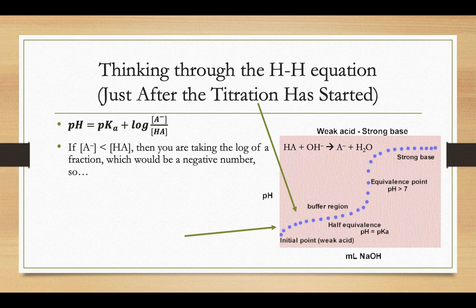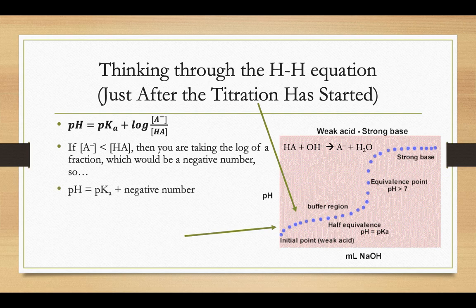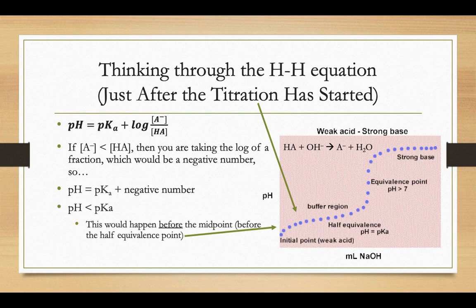So the A minus concentration would be less than our HA, and if we did the log of A minus over HA, since A minus is smaller than HA, we're taking the log of a fraction, so that's a negative number. If your log of A minus over HA is a negative number, and we're adding that to the pKa value, that means that the pH is going to be less than the pKa.